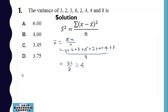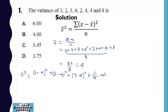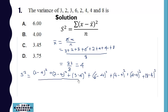The mean is 4. So now our variance will be equal to: (3 minus 4) squared plus (2 minus 4) squared plus (3 minus 4) squared plus (6 minus 4) squared, plus (4 minus 4) squared plus (4 minus 4) squared plus (8 minus 4) squared, all over 8. This gives us 1 plus 1 plus 4 plus 4.